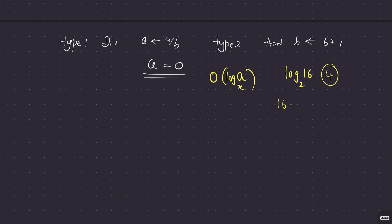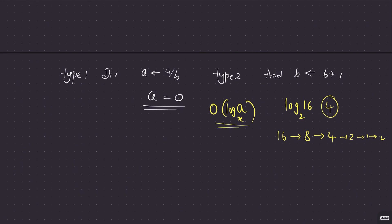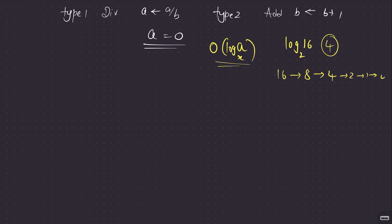For example: start with 16, divide by 2 repeatedly — 16, 8, 4, 2, 1, 0 — that's 5 operations, which matches log base 2 of 16 = 4 (approximately). So if you want to destroy a number by continuously dividing by some other number, log gives us the operation count.